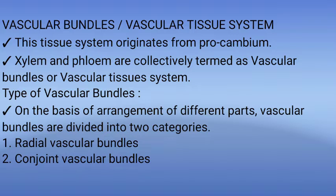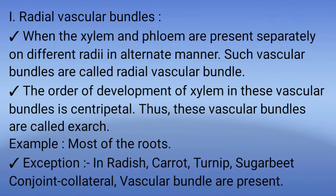Types of Vascular Bundles: On the basis of arrangement of different parts, vascular bundles are divided into two categories: 1. Radial Vascular Bundles, 2. Conjoint Vascular Bundles.